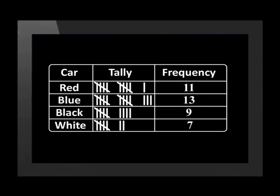The fifth mark is drawn through the other four marks to make the groups of tallies easy to count. If we look at the blue cars, we can quickly see that there are two groups of five tallies and three extra tallies, coming to a total of 13.